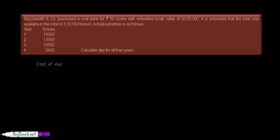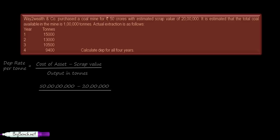Let us first calculate the rate of depreciation: cost of asset minus scrap value divided by output in tons equals depreciation rate per ton. Let us substitute the figures. So 50 crores minus 20 lakhs divided by the estimated total output of 1 lakh tons given in the question gives us the answer of 4,980 rupees per ton. So this is the rate of depreciation per ton.